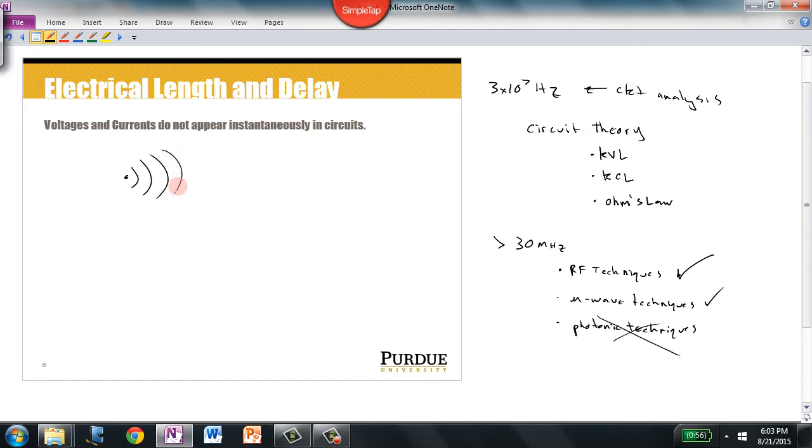These electromagnetic waves propagate in free space or in conductors, and it takes time for signals to propagate through wires, communication channels, or free space. Unlike what we've told you in previous classes, it isn't instantaneous.